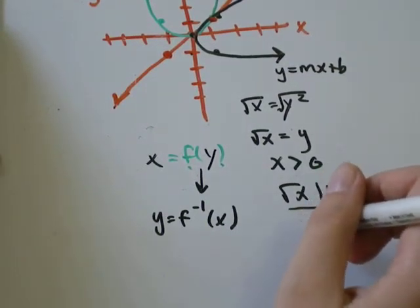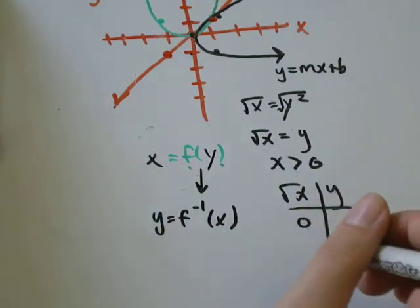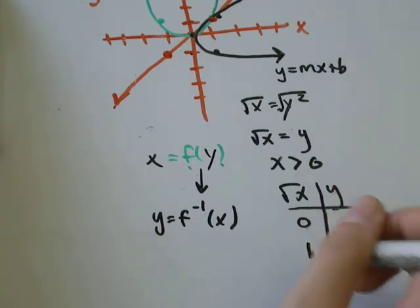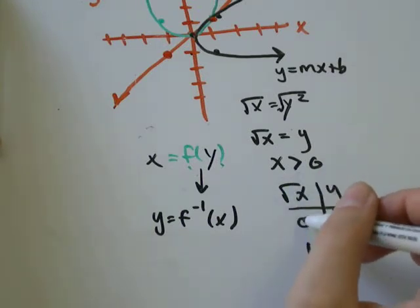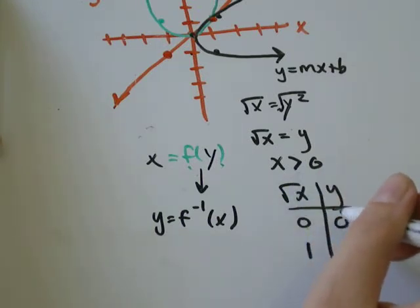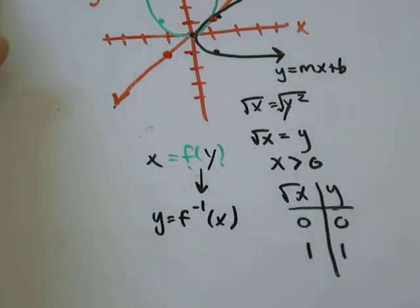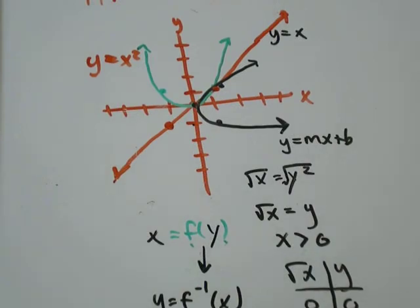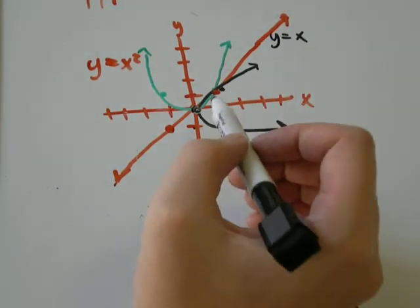So, if x was, we can't use negative one, but we can use zero. Let's use positive one. Okay. So, the square root of zero is zero, and y would be zero. The square root of one is one. So, let's go back to our chart. And we've got the point zero, zero. And we've got the point one, one.